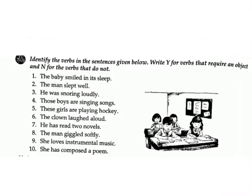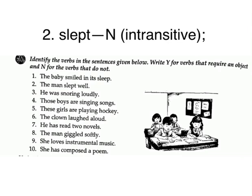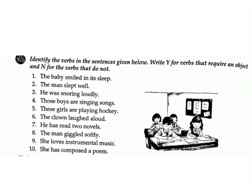Exercise A: Identify the verbs in the sentences given below. Write Y for verbs that require an object and N for verbs that do not. 1. The baby smiled in its sleep. Answer: smiled, N, intransitive. 2. The man slept well. Answer: slept, N, intransitive.